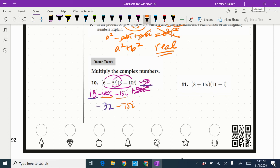In number 11, we're going to FOIL again. So 8 times 11 is 88. And 8 times i is 8i.